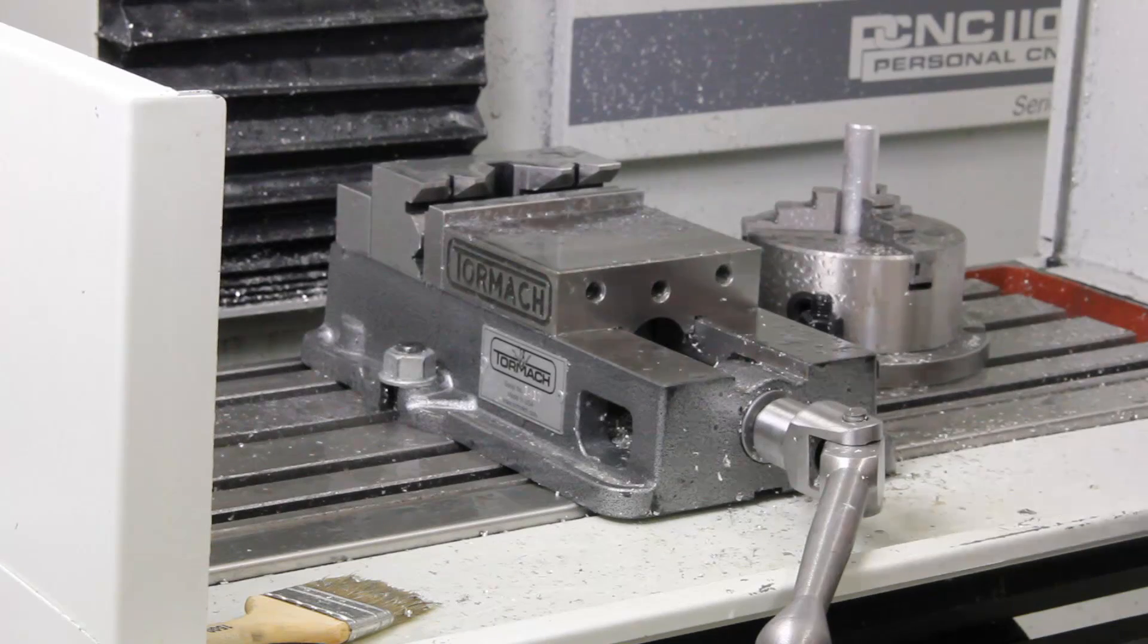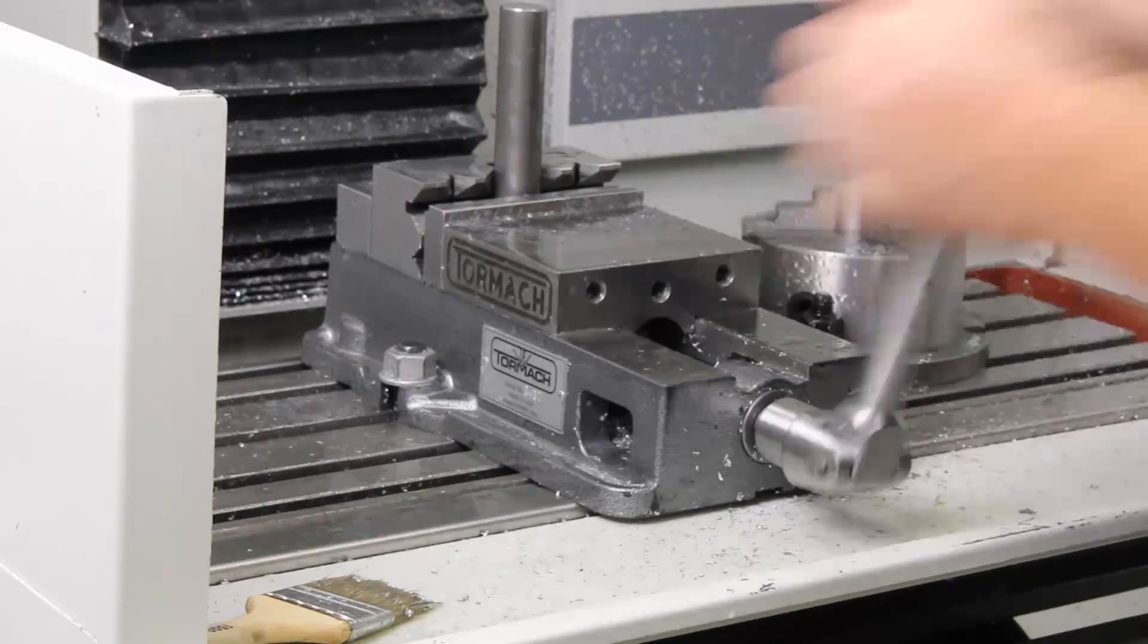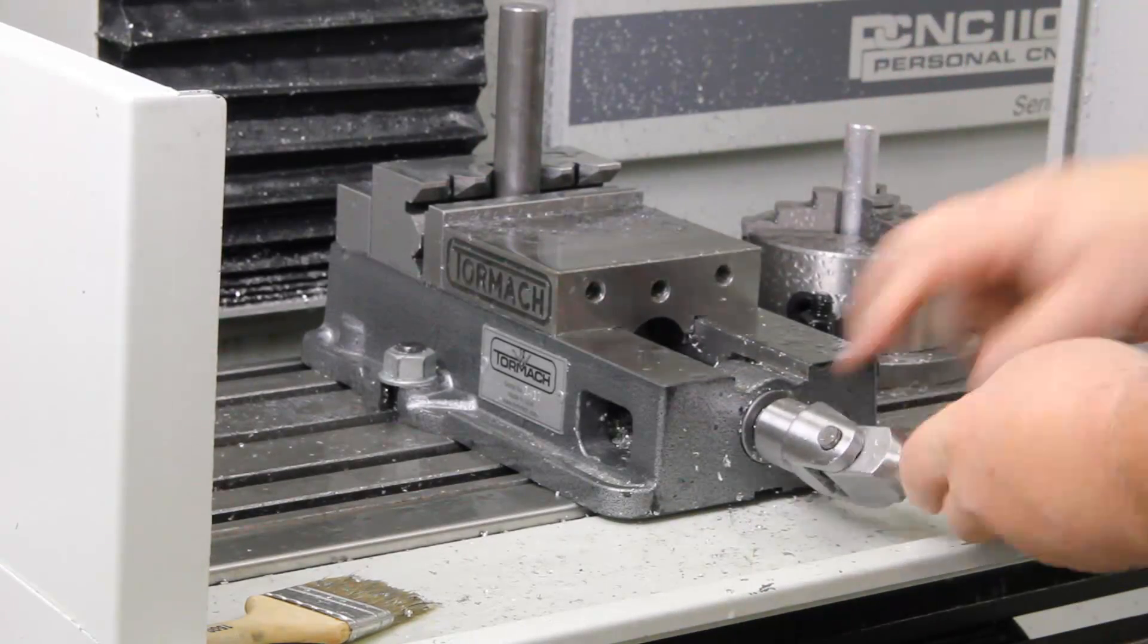In this first example we will be threading 1018 steel. For work holding we will use v-block jaws in our 5 inch machinist's vise.